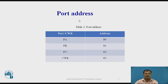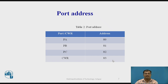Let us see the port addresses. Port A has address 80H, Port B has address 81H, Port C has address 82H, and the control word register (CWR) is at address 83H. We will use these values while writing the assembly language program.